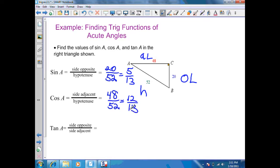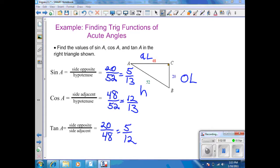And tangent of A would be side opposite, which is 20, over adjacent leg, which is 48. And when I simplify, I'm going to get 5 over 12. If need be, I can substitute these fractions into a calculator to get them into a decimal form.